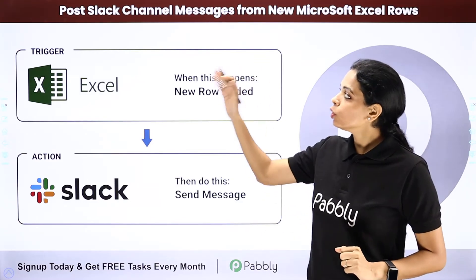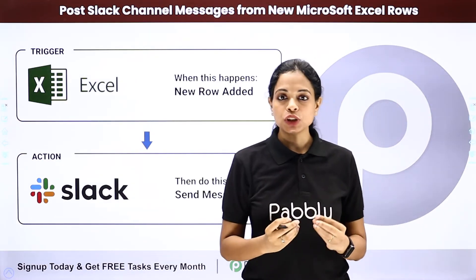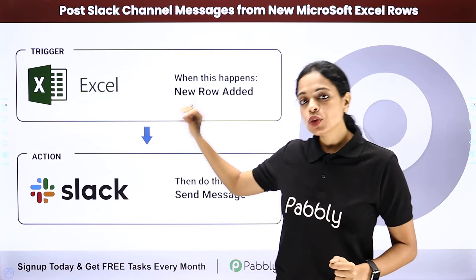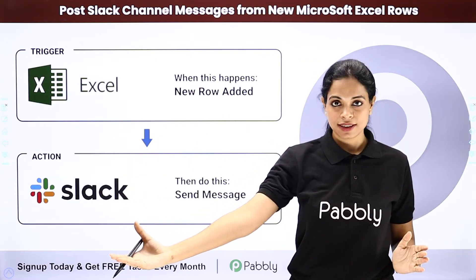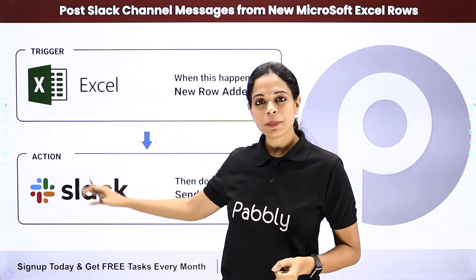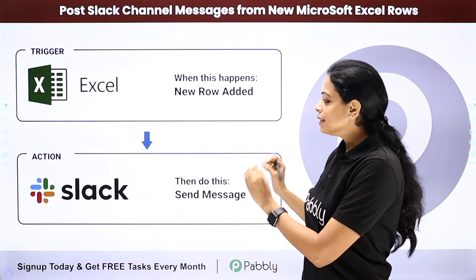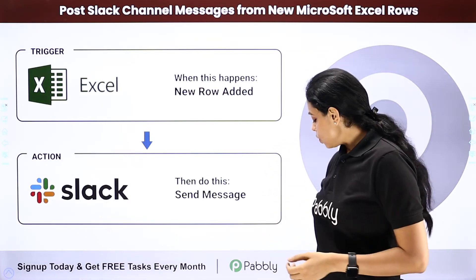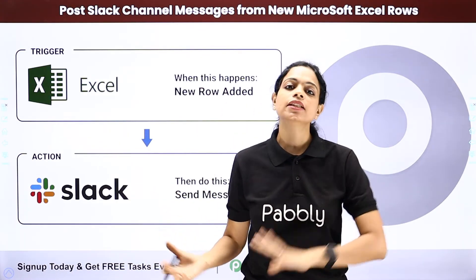And then, we have posting Slack channel messages from new Microsoft Excel rows. You have received information — let's say client information or project details on Microsoft Excel. Now you want that information received through Google Forms or anything to be shared with your team on Slack. Different channels are there and you want to send it to all your teams. You will have to integrate these two applications. Microsoft Excel will be your trigger application and Slack would be your action application. In this way, you can make your life so much easier and at the same time save a lot of time. These are some of the ways where you can automate Slack and connect it with Pabbly Connect and integrate it with different applications.